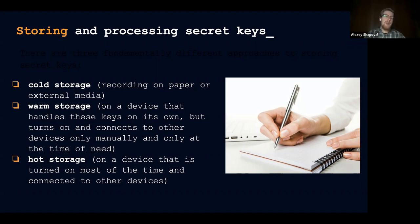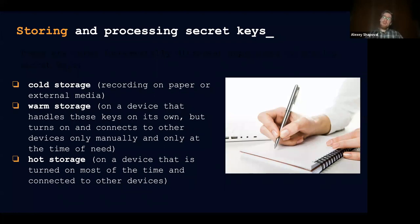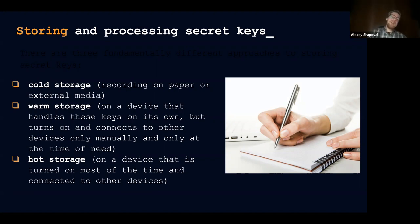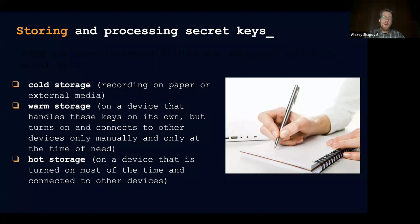The number of possible attack vectors really increases on an internet-connected device, and that's why cold storage can be a viable option for certain cases. The next approach is warm storage — this is a device that handles the keys on its own but turns on and connects to other devices only manually and only at the time of need. It's in the middle of the two approaches: not completely cold (always disconnected) and not completely hot (always connected). It can connect to the internet but only when you need it — for example, to send a transaction or sync your current balance.